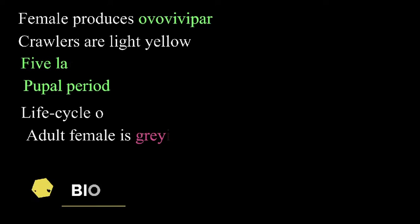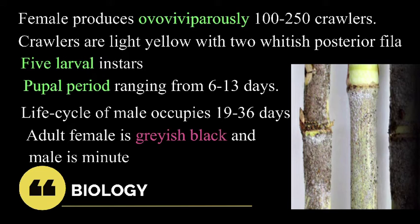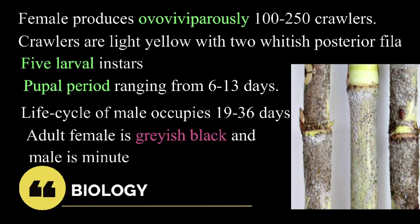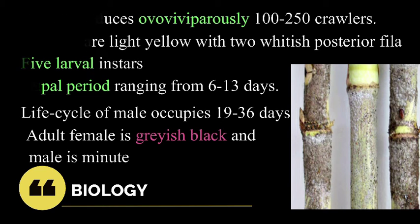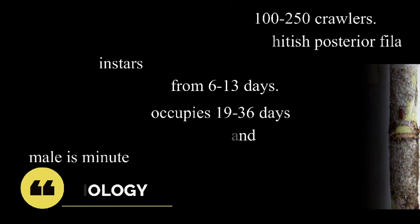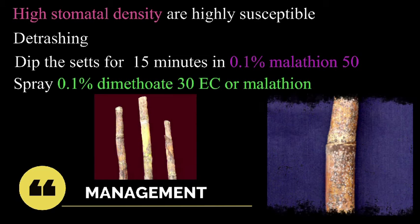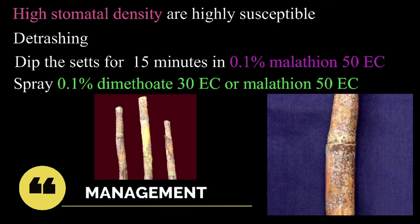Biology: the female produces viviparously 100 to 250 crawlers. The crawlers are light yellow with two whitish posterior filaments, having five larval instars with the pupal period ranging from 6 to 13 days. The life cycle of the male occupies about 19 to 36 days. The adult female is grayish black in color. Management: varieties with high stomatal density are highly susceptible; detrashing minimizes attack.